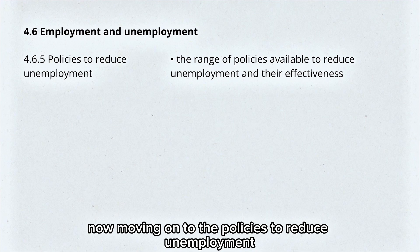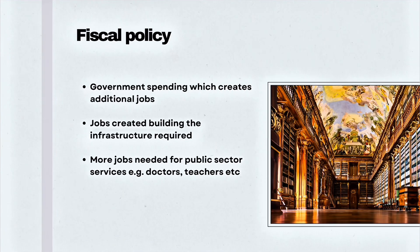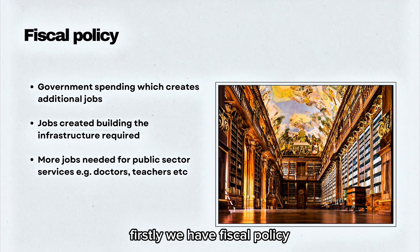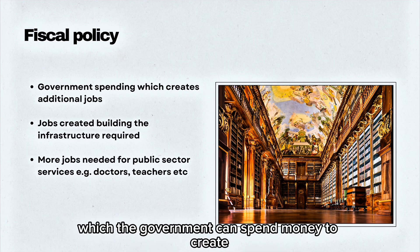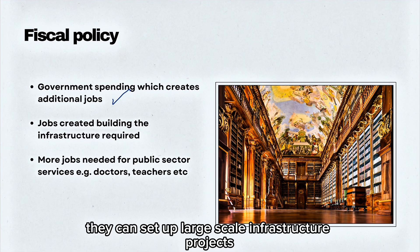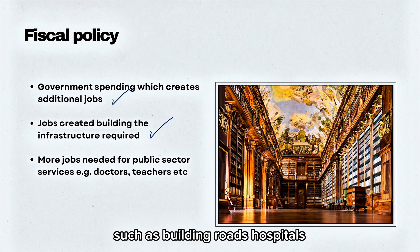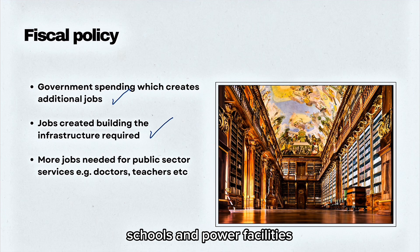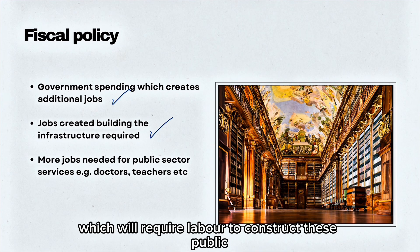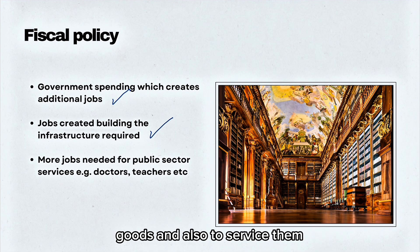Moving on to the policies to reduce unemployment. First, we have fiscal policy, where the government can spend money to create additional jobs. They can set up large-scale infrastructure projects such as building roads, hospitals, schools and power facilities, which require labour both to construct these public goods and to service them.